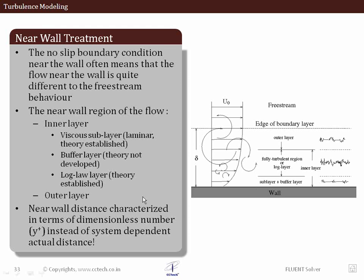Near the wall, the flow is more or less stagnant and that's where most of the boundary layer behavior is very interesting to note. The near-wall treatment is especially important if we are trying to accurately predict wall shear stresses, heat transfer coefficient, and heat transfer phenomena. The no-slip boundary condition means near the wall there is a completely different behavior compared to the free stream. This near-wall region is divided into the inner layer and outer layer regions, and the inner layer is where turbulence models can't really predict so well.